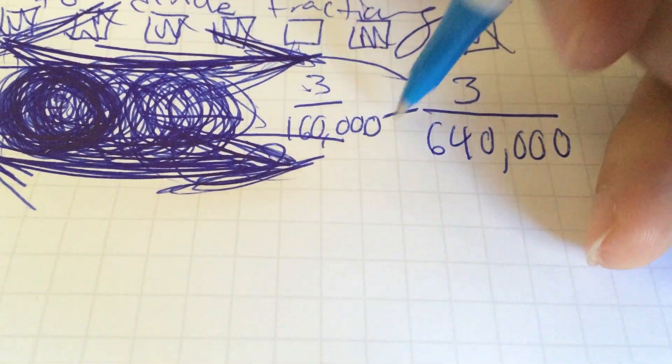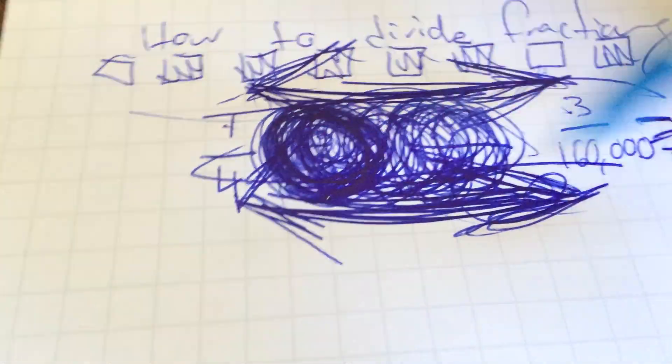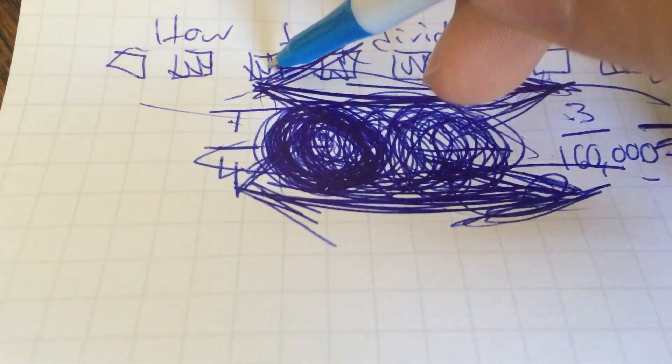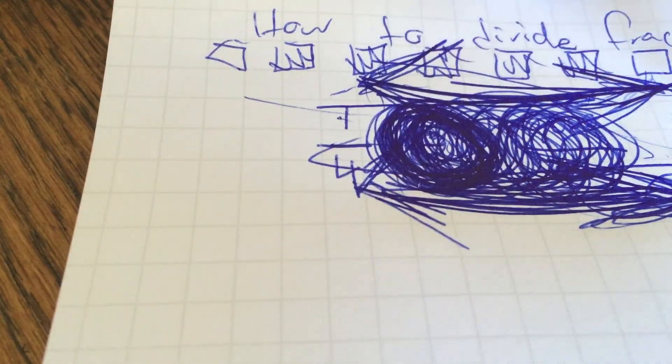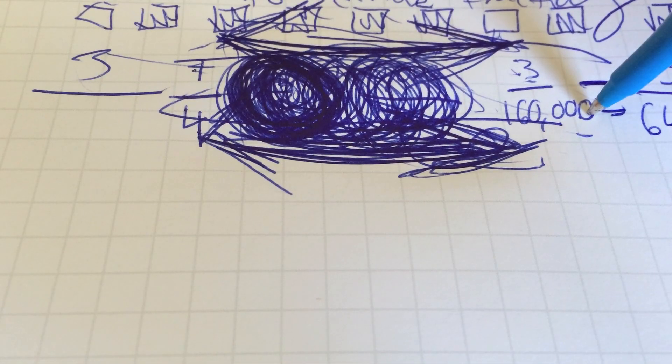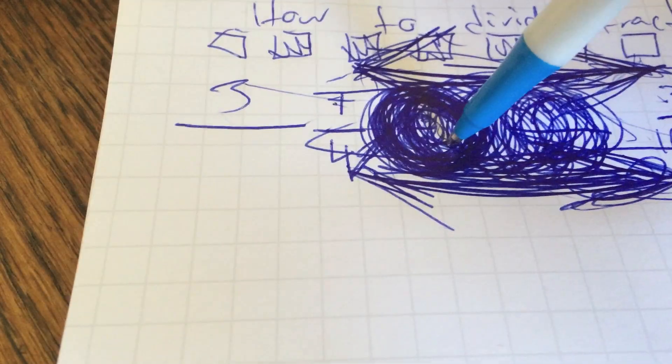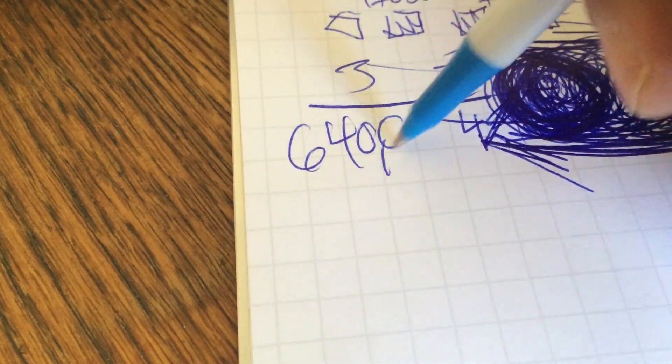This is going to be your equal sign. And of course, if you had done it in the reverse, heading the opposite direction in the vorticular, you would have 3 times 1, which again is 3, and 160,000 times 4, which is 640,000.